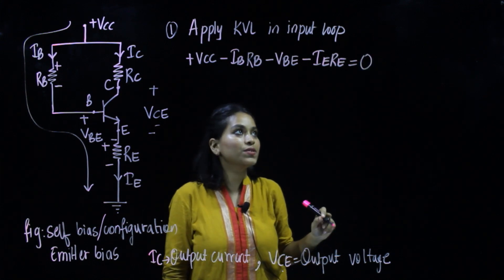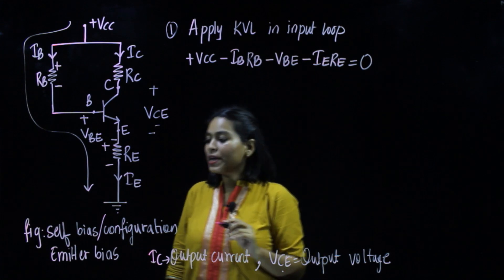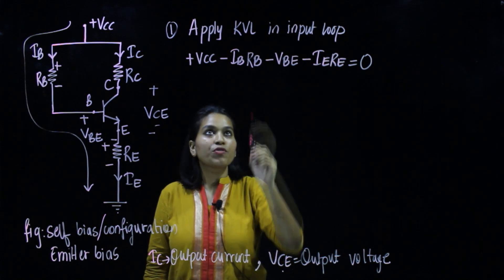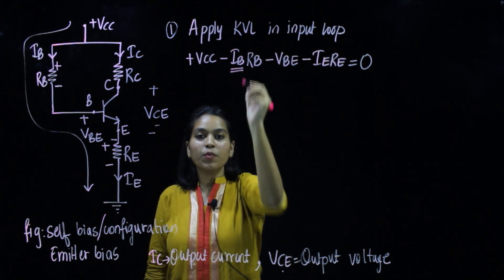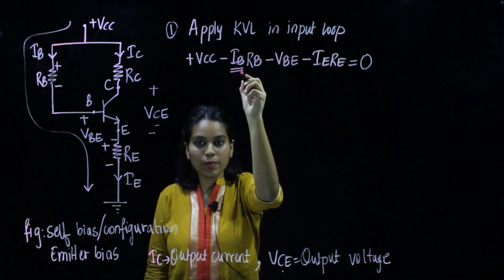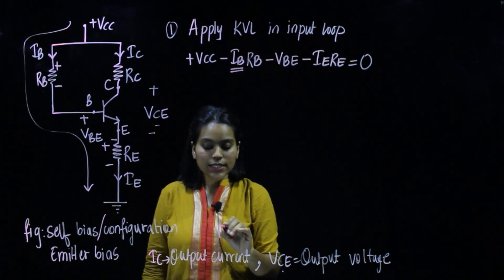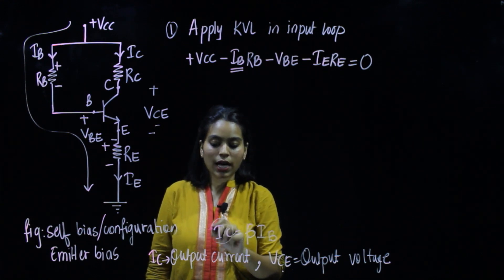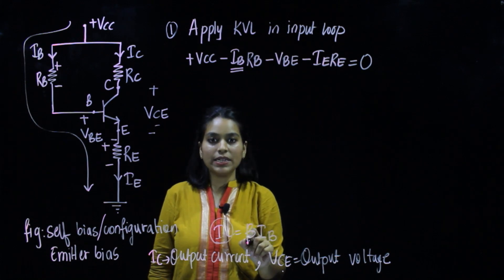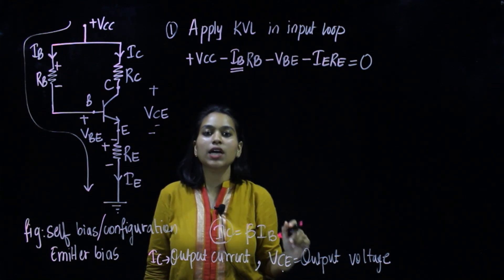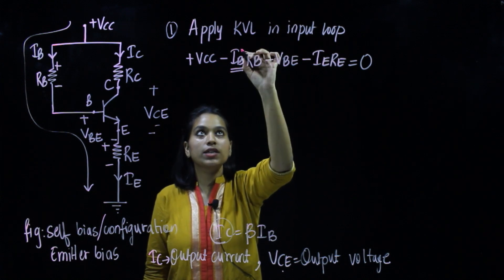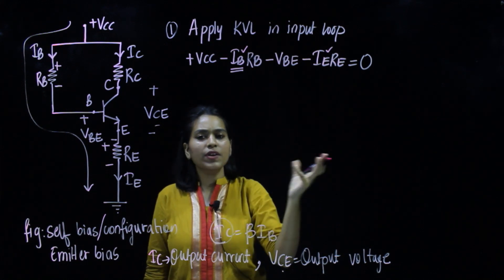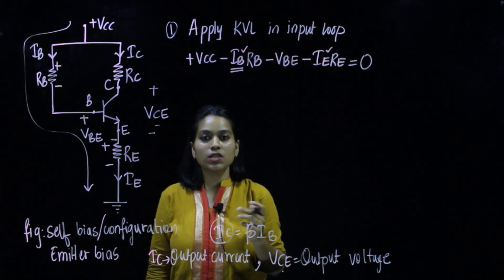Now we have to find IC. Basically, the approach is to find IB first, because IC = β·IB, so we can easily find IC by multiplying IB with beta. However, here we have two different currents in the equation — IB and IE — so we need to express IE in terms of IB.